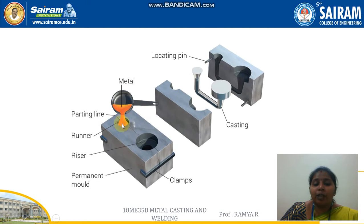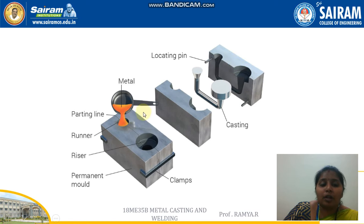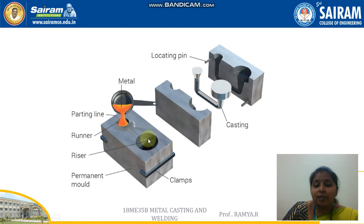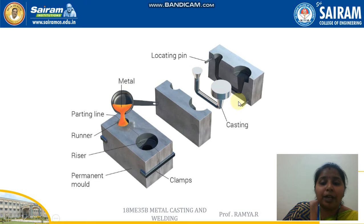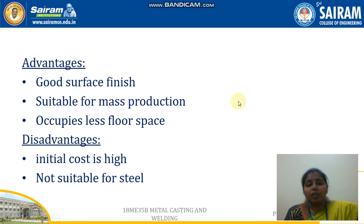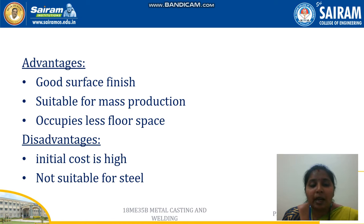The molten metal is poured into the runner and occupies the entire cavity under gravity. Once the molten metal reaches the riser, it is allowed to cool. After cooling, the clamps are separated and the boxes are separated. The runner and riser attachments are machined and removed, and the surface is ground to get a better surface finish. The advantage of this process is it gives a good surface finish and is suitable for mass production, occupying less floor space. The disadvantage is the initial cost is high and it is not suitable for steel.